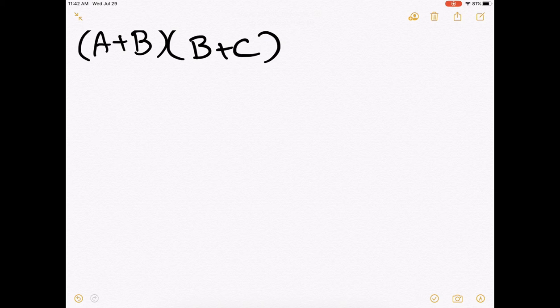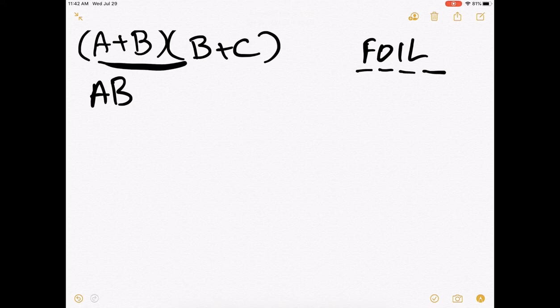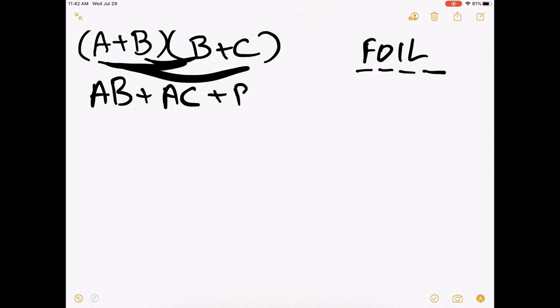So the first one is this expression, A or B, anded with B or C. So I want you to remember FOIL from your algebra class. First, outer, inner, last. So let's do that. First is A and B, outer is A and C, inner is B and B, last is B and C.